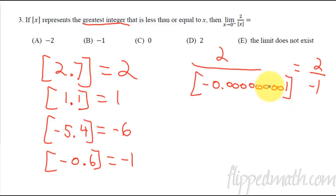What does that give me? It's going to give me 2 divided by what is the greatest integer of this? You haven't reached 0 yet, so it's going to spit out negative 1. Until you get to 0, once you get to 0, then it's going to spit out a 0. But until you get there, it's going to always give the integer that's just smaller. And because we're approaching 0, we don't actually ever get to 0, so it will always be a negative 1.